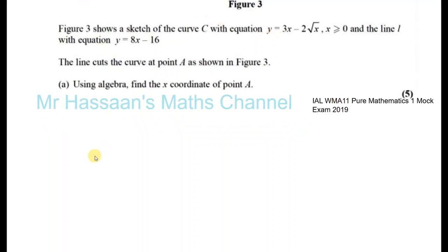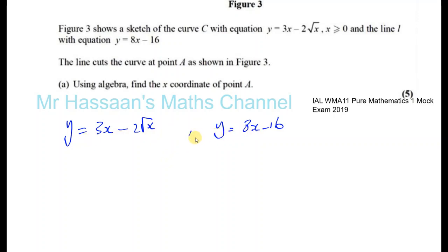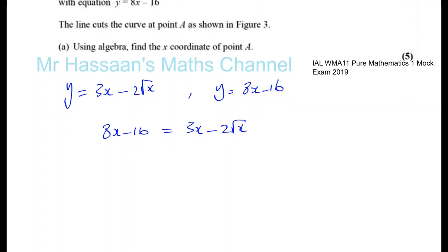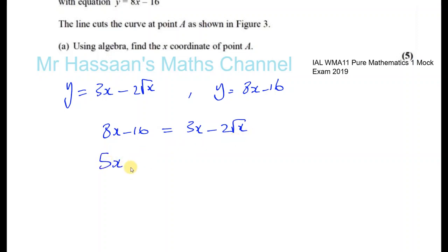We have two equations: y equals 3x minus 2 root x, and y equals 8x minus 16. The simplest way to solve this is to make them equal to each other. So we can say 8x minus 16 equals 3x minus 2 root x, and bringing everything to one side gives 5x plus 2 root x minus 16 equals 0.